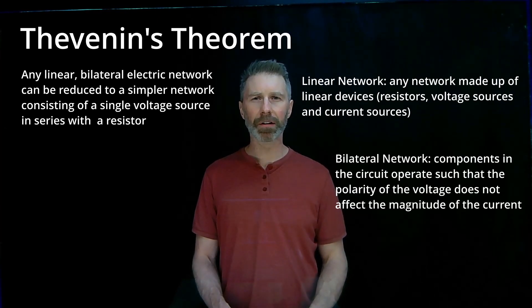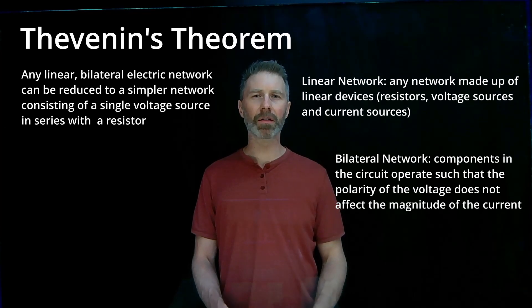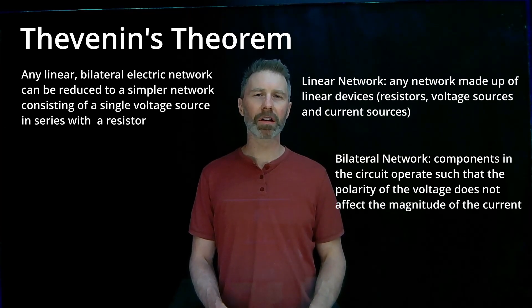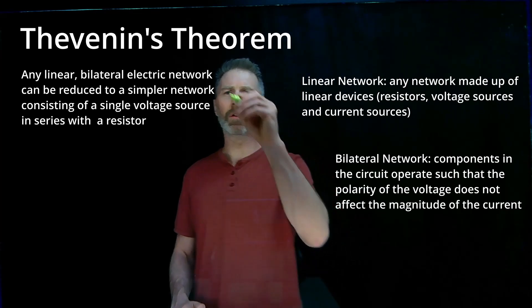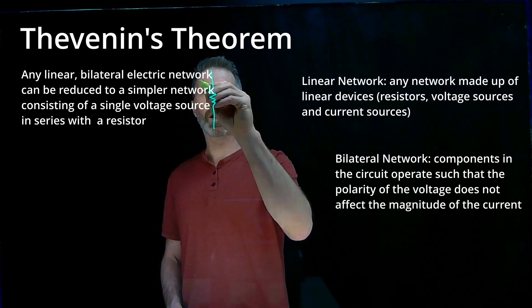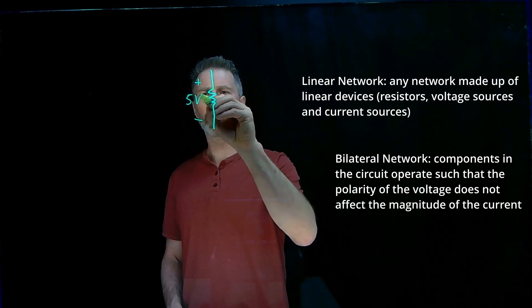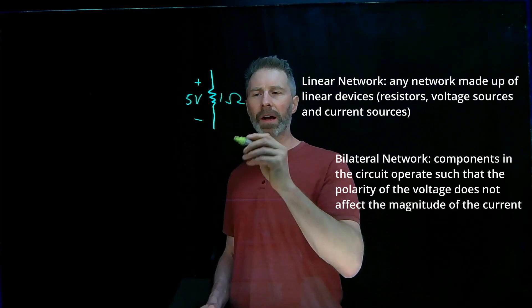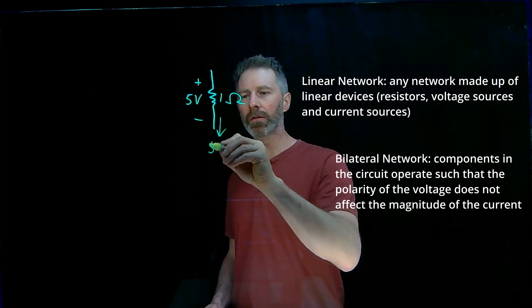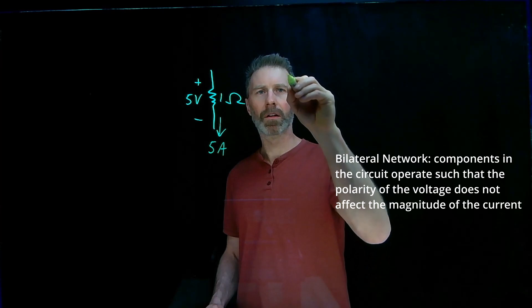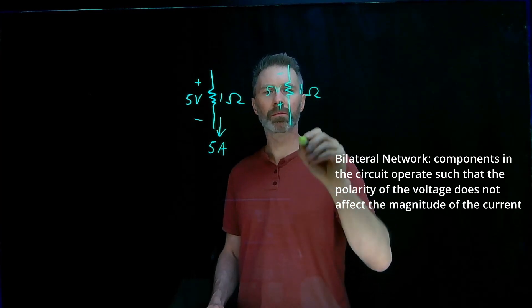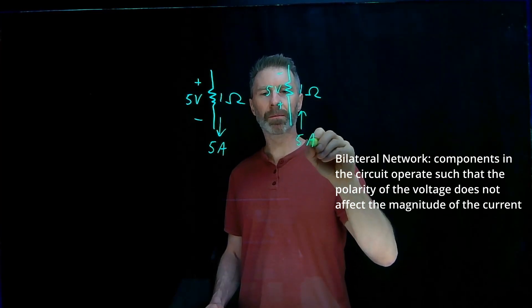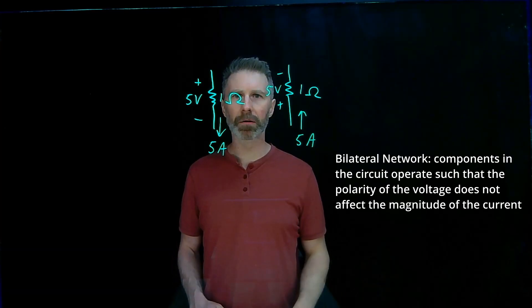As far as a bilateral network goes, that just means the components in the circuit operate such that it doesn't matter what the polarity of the voltage across it is — the magnitude of the current through it is going to be the same. So if I have a resistor and I apply 5 volts across it, say it's a 1 ohm resistor, the magnitude of the current is 5 amps. If I change the polarity of the voltage, the magnitude of the current is the same, just the direction is different.